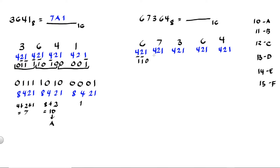Next we have 7. 7 is the sum of 4, 2, and 1, so these are all 1s. So 7 is equivalent to 1, 1, 1 in binary. Next we have 3. 3 is the sum of 2 and 1, so those are 1s. And since we don't use 4, that is 0. So 3 in binary is 0, 1, 1. And next we have another 6, so that is 4 and 2 — those are 1s — and we don't use 1, so that is 0. And we have 4: to get 4 we only use 4, so that is 1 and we don't use 2 and 1, so those are 0s.